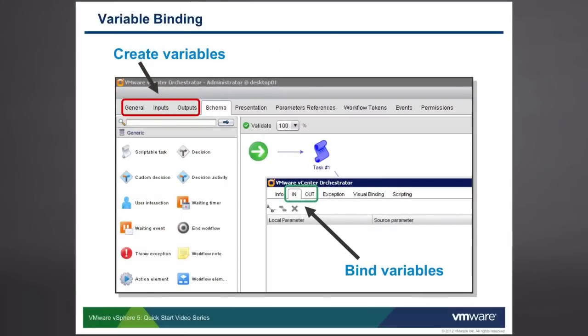When setting up variable binding, you first have to create the variable, which we've illustrated how to do in the previous video. In the previous video, we specifically showed you going into the inputs tab to create an input parameter. If you want to create an output parameter, you would go to the outputs tab, and attributes are created by going to the general tab. But in the case of all three of those types of variables, you create them with the general inputs and outputs tab.